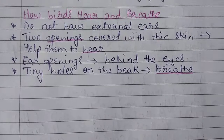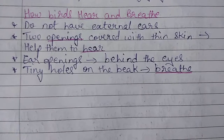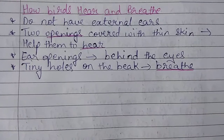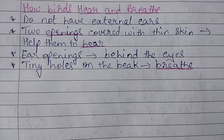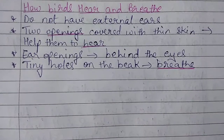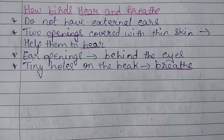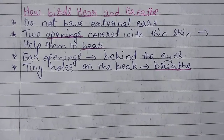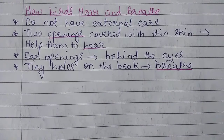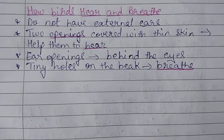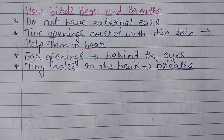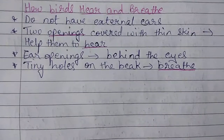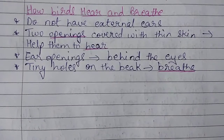Even though birds can hear, they do not have external ears — matlab unke jo ears hai wo bahar nahi dikhte hai, you cannot see them on their bodies. Unlike our ears, which are visible and external, birds do not have external ears. But they do have ears — they have two openings which are covered with thin skin.